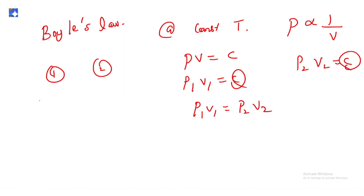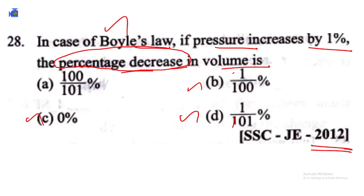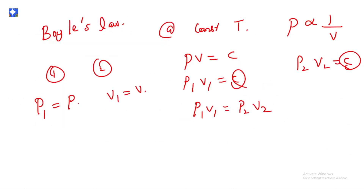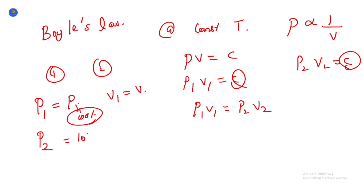Let the initial pressure P₁ = P and initial volume V₁ = V. The pressure increases by one percent, meaning the original pressure is 100% and the new pressure is 101%, so P₂ = 1.01P.